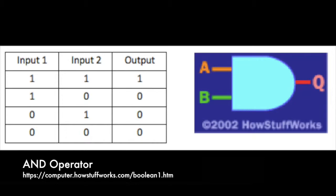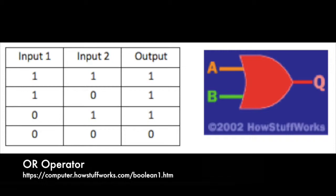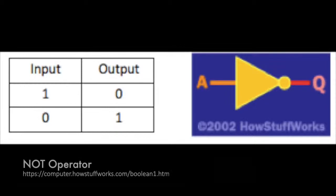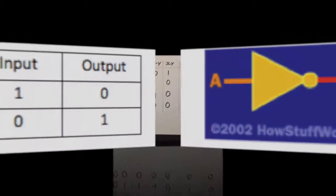The AND operator takes two inputs and produces one output. If both inputs are true, then the output would also be true. The OR operator also takes two inputs and produces one output — just one of the inputs must be true to produce an output that is true. The NOT operator, or inverter, takes an input and produces the opposite output to what is received.